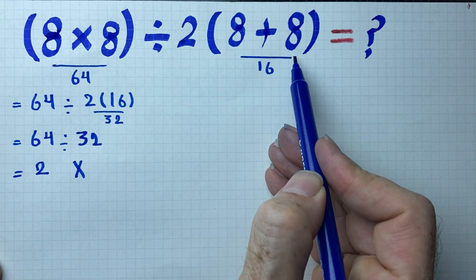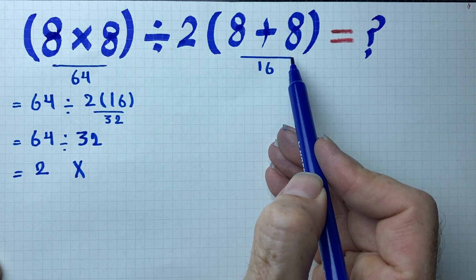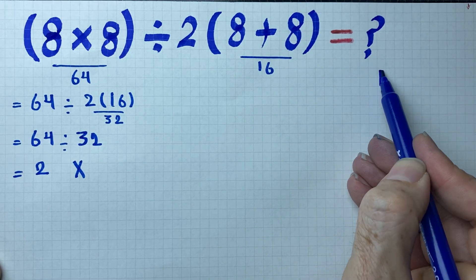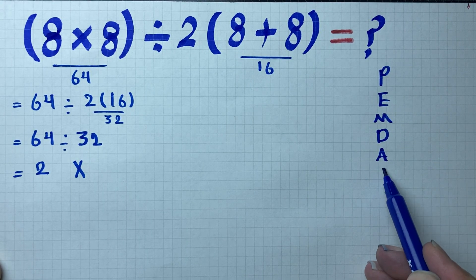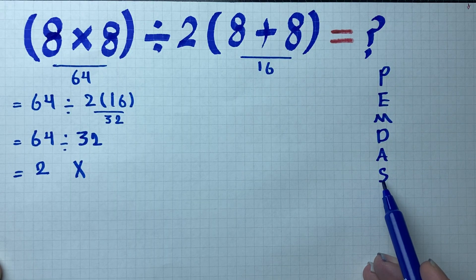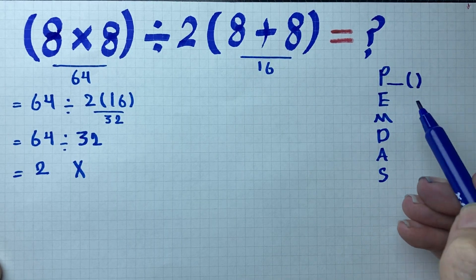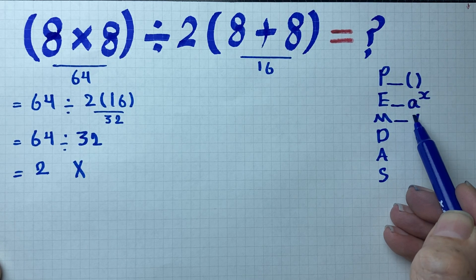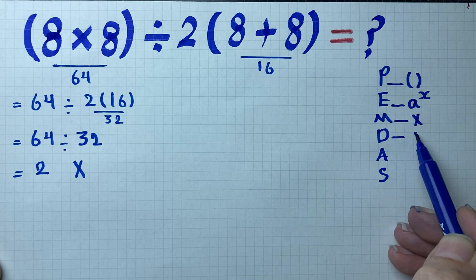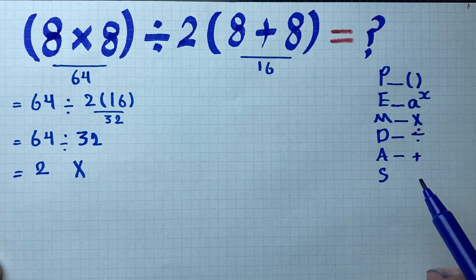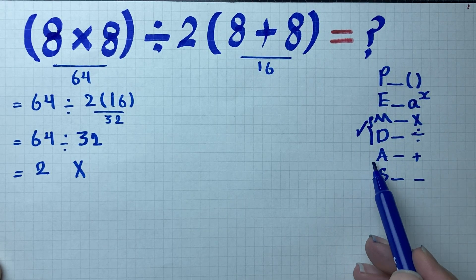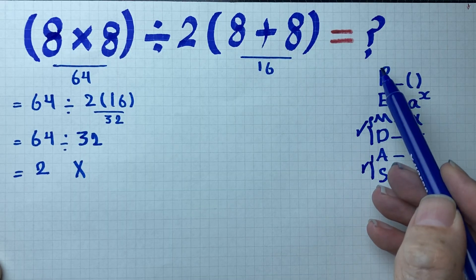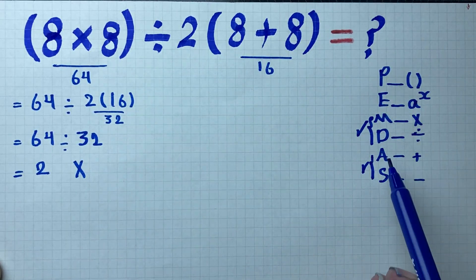To solve this question we need to follow a set of rules called the order of operations. The order of operations can be remembered by PEMDAS — P, E, M, D, A, S. Each letter stands for a different operation: P for parenthesis, E for exponent, M for multiplication, D for division, A for addition, and S for subtraction. Remember, multiplication and division share the same level, and addition and subtraction also share the same level.